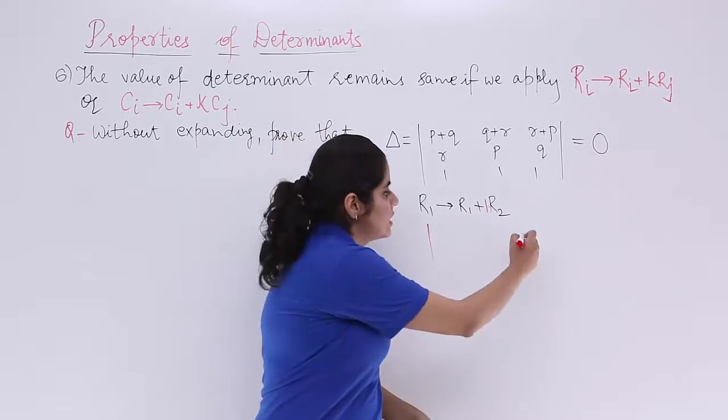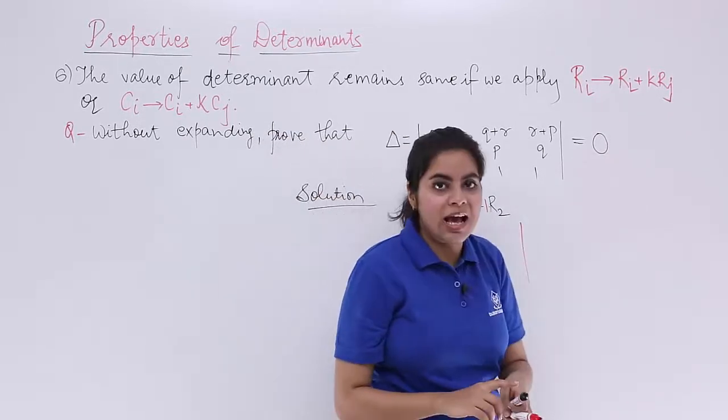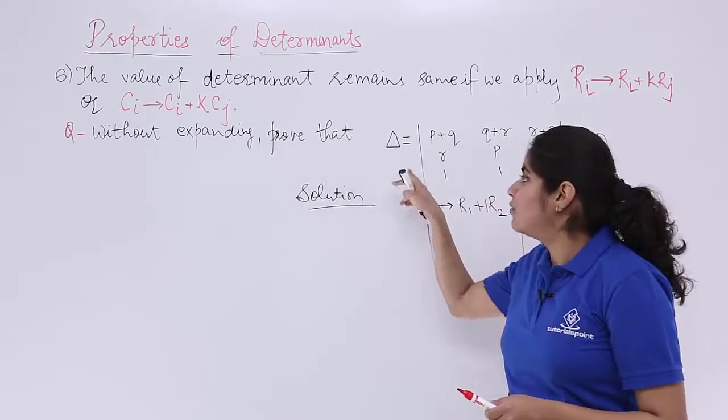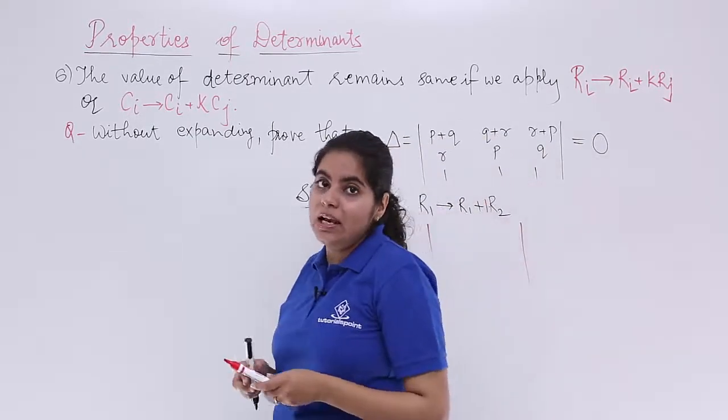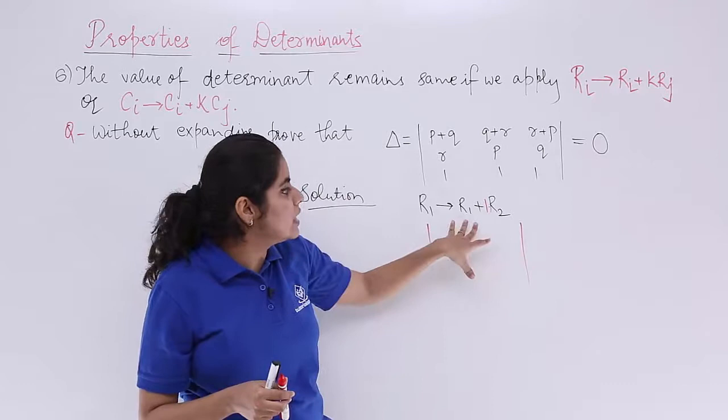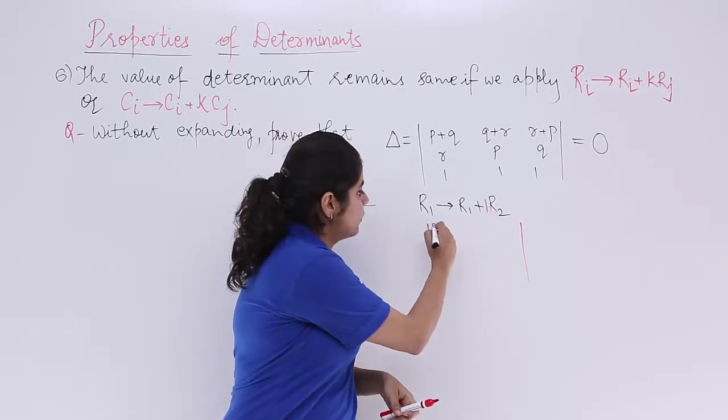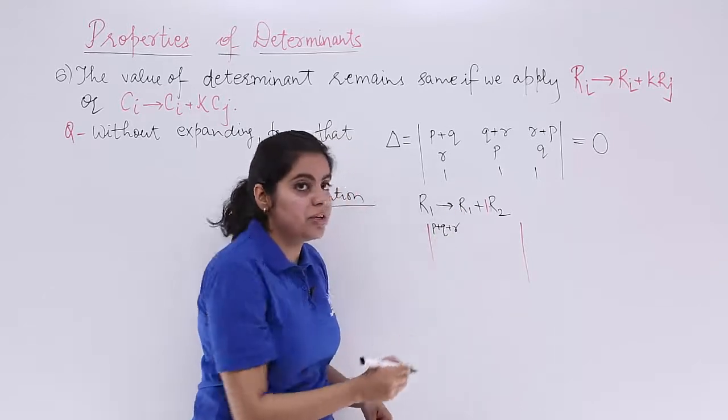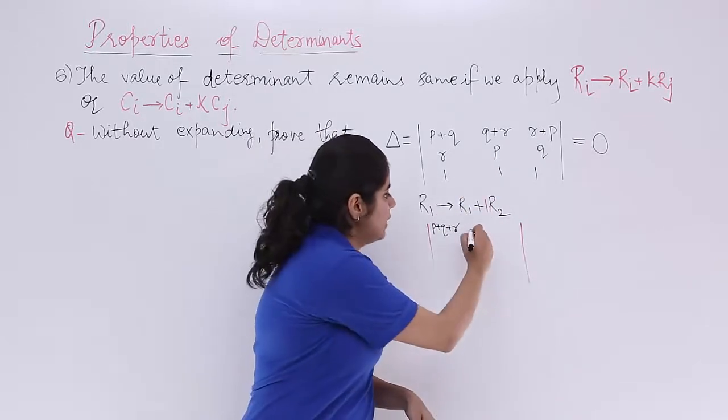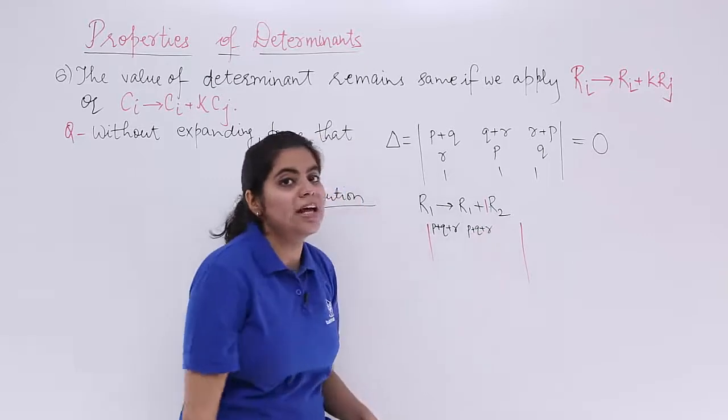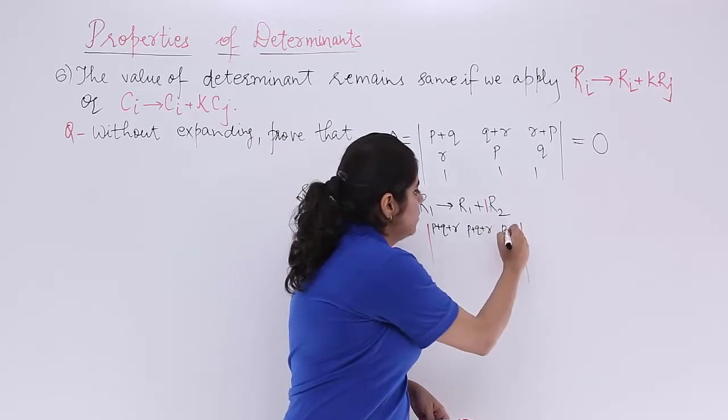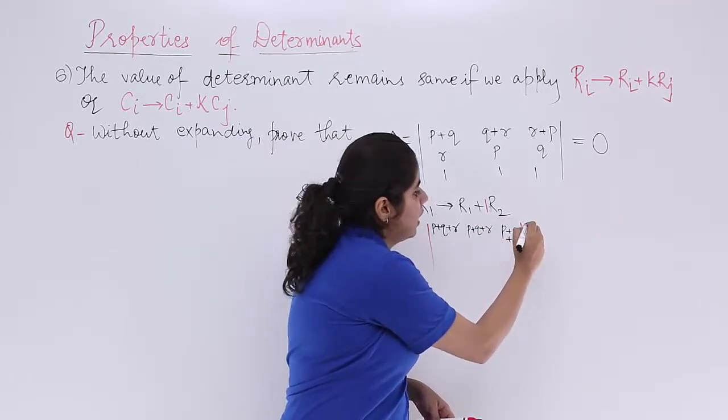Do the operation as you have written. Add things as you have written. So you know that we have del and we have to add certain things, R1 and R2. So P plus Q plus R is what we are going to get. The first element, again P plus Q plus R. And again P plus Q plus R.